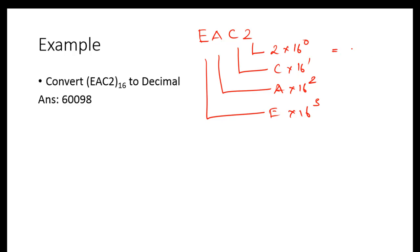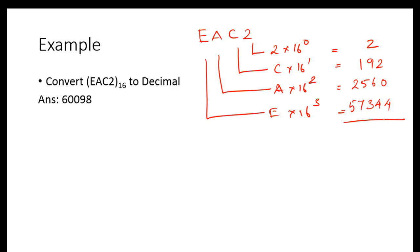16 power 0 is 1, so we get 2. 16 × C gives 192. 16 squared × A gives 2560. And E × 16 cubed gives a large value. Adding all of these together, you get the final decimal result.